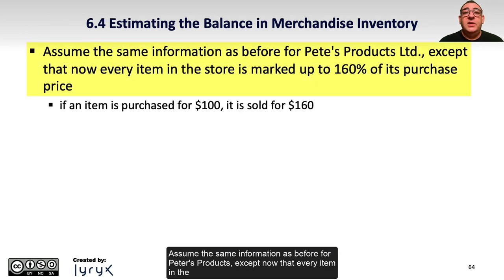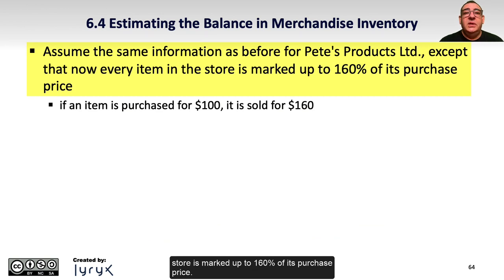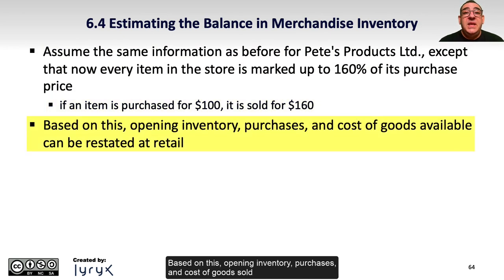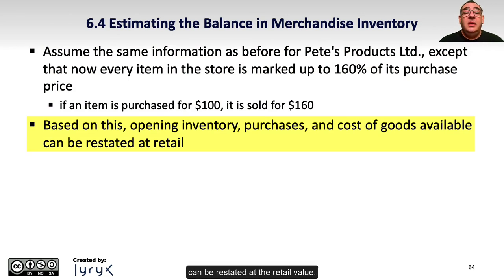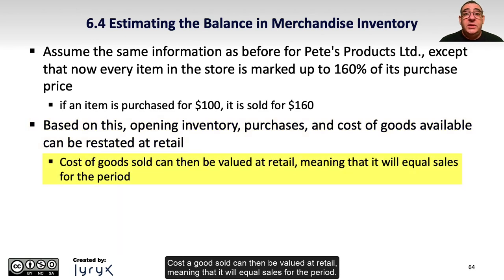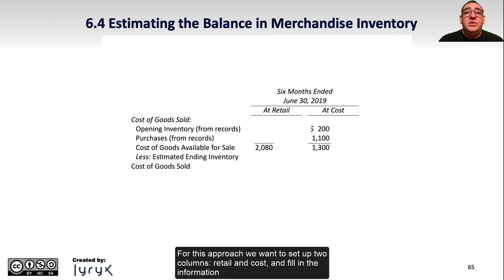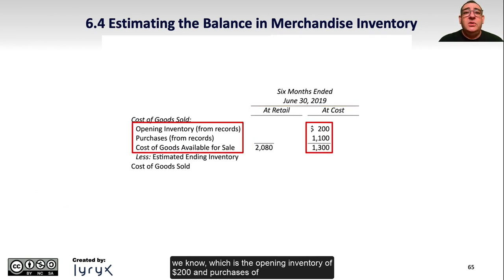Assume the same information as before for Pete's Products, except that now every item in the store is marked up to 160% of its purchase price. So if an item is purchased for $100, it's sold for $160. Based on this, opening inventory, purchases, and cost of goods sold can be restated at their retail value. For this approach, we want to set up two columns — retail and cost — and fill in the information we know, which is the opening inventory of $200 and purchases of $1,100, for cost of goods available of $1,300.